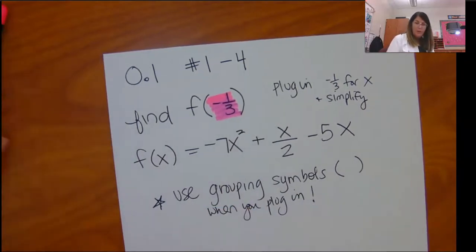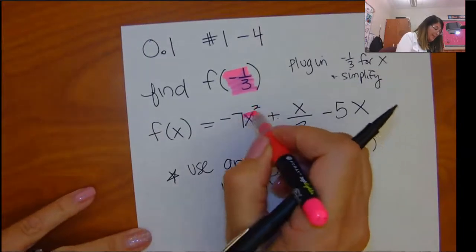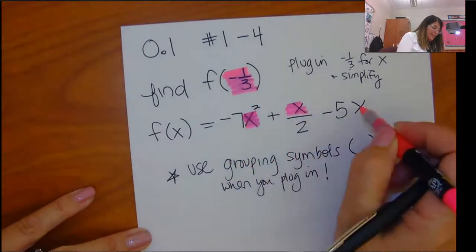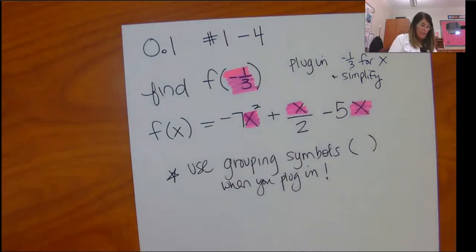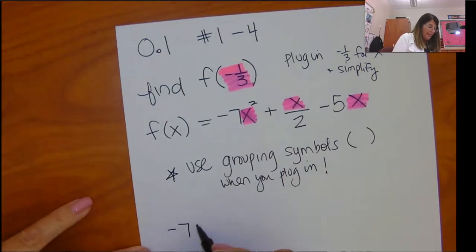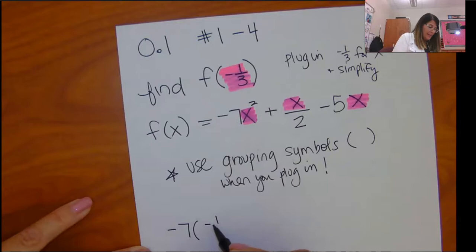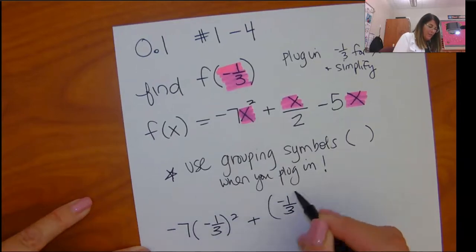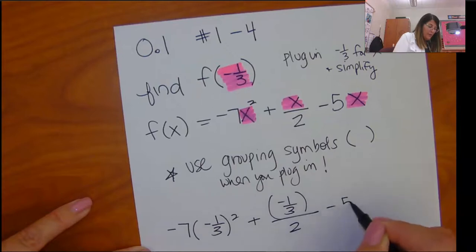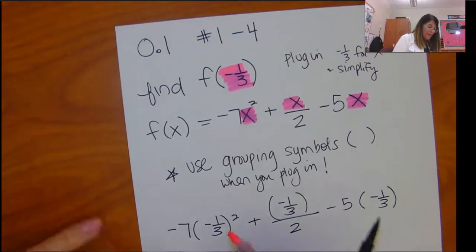So what we are going to do is we are going to go to this equation and everywhere I see an x, I am going to replace it with negative 1 third. So negative 7 times negative 1 third squared plus negative 1 third over 2 minus 5 times negative 1 third.